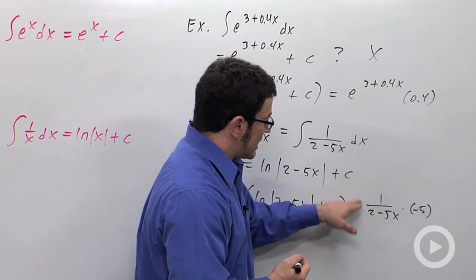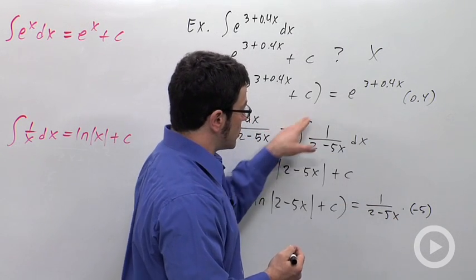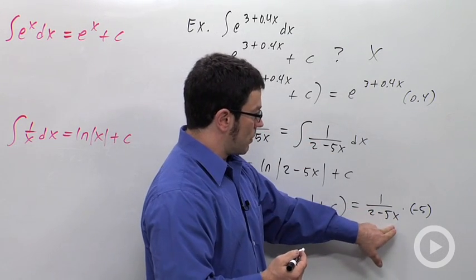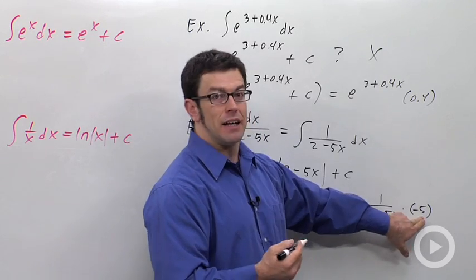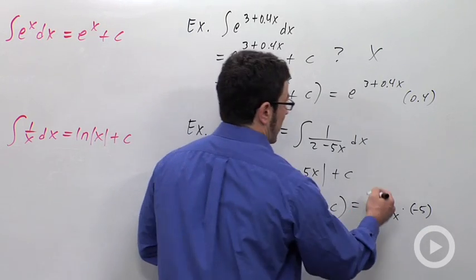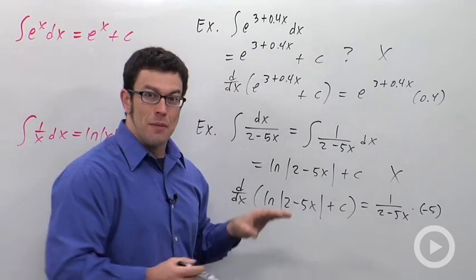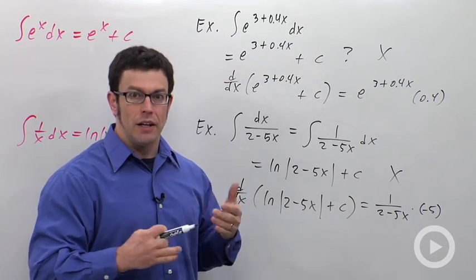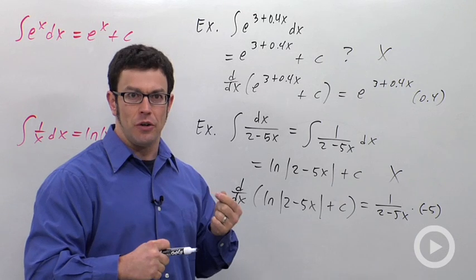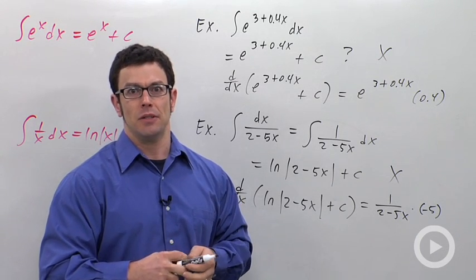And the derivative of the plus c is just 0. Right now, I can see that this is not the same. I started with 1 over 2 minus 5x, and I ended up with 1 over 2 minus 5x times negative 5. So this is not right. So both of these examples I just did are incorrect. The way to integrate these is using the method of substitution. And we'll show you this in upcoming examples.